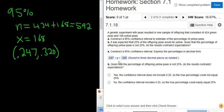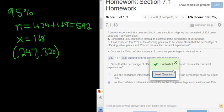So no, there is no contradiction. 25% is between these numbers, so we're okay. No, the confidence interval includes 0.25, so the true percentage could easily equal 25%. That's the perfect answer.